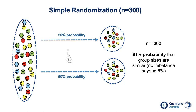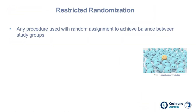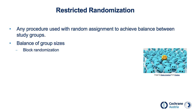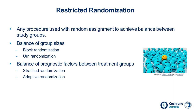Since we cannot always increase the sample size, we need other solutions for small studies. A solution to achieve balanced treatment groups in small studies is a family of randomization methods called restricted randomizations. Restricted randomization refers to any procedure used within random assignment to achieve balance between study groups in size or prognostic factors. To balance group sizes, we can use block randomization or urn randomization. To balance prognostic factors between treatment groups, we can use stratified randomization or adaptive randomization.